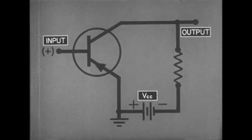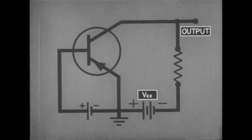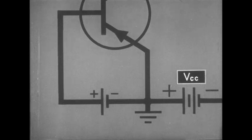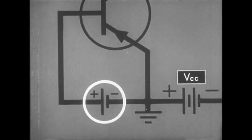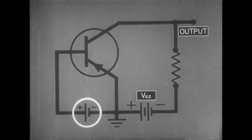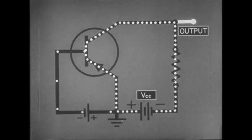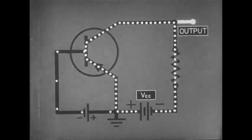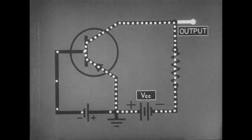The collector output is controlled by voltage applied between the base and emitter. When the input signal, battery voltage here, is applied as forward bias, current flows in the collector circuit. The switch is on and there's an output.